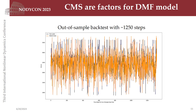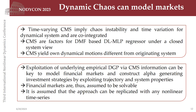The denoted backtest can be seen visualized here. In summary, dynamic chaotic motions can model financial markets. I showed that time-varying CMS implies chaos instability and time variation for the underlying dynamical system. Further, the CMS are co-integrated and shown to be factors for a dynamic multi-factor model based on a deep learning multi-layer perceptron regressor under a closed system view. This means performance can drastically increase by including exogenous variables such as macroeconomic indicators. Finally, quantifying the empirical data generating process of the CMS reveals that they yield their own dynamical motions, which are different from the originating system. The exploitation of the underlying empirical DGP via CMS information can potentially generate alpha-generating investment strategies.